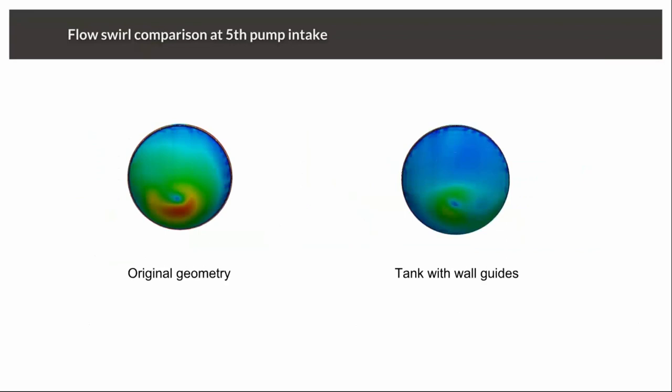The next important parameter for these sump computational model studies is the calculation of swirl angle. The Hydraulic Institute Standards state that the swirl angle should be less than five degrees. For the original geometry, the swirl angle was really very high — especially for the fifth pump where the columns were causing flow separation and thus increasing the swirl angle. After subsequent modifications to the geometry, we found that the swirl angle was reduced to a great extent and is well within the acceptable limit.